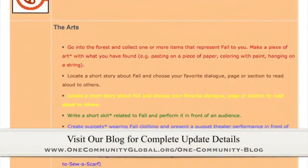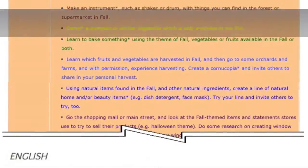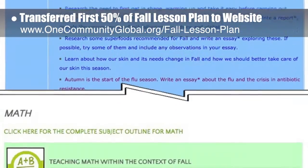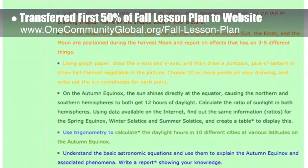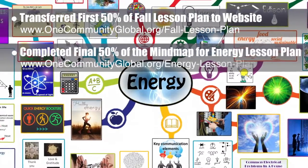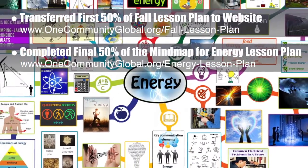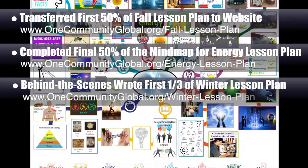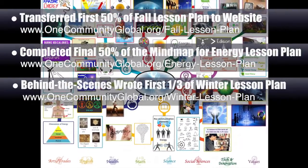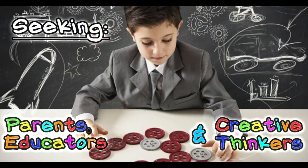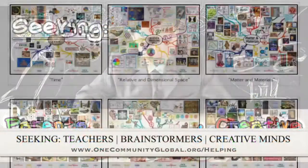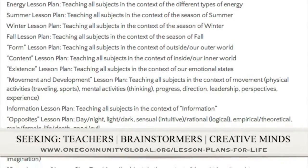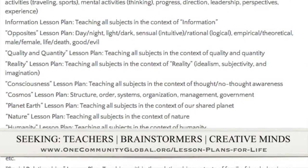This week the core team — which includes the pioneer members plus those helping who don't wish to be individually acknowledged — transferred the first 50% of the written content for the fall lesson plan to the website, as you can see here. This lesson plan is purposed to teach all subjects to all learning levels in any learning environment using the central theme of fall. We additionally completed and added the final 50% of the mind map for the energy lesson plan to the webpage, which completes that page of the website. Behind the scenes we also wrote the first third of the winter lesson plan, bringing that to about 30% complete. If you'd like to help, we are seeking people to finish these lesson plans — we've got them all outlined and we're looking for creative minds to contribute to our open source and free shared education program for all ages and all educational levels.